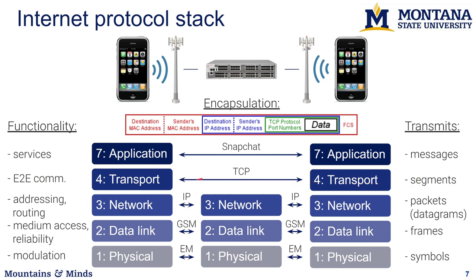TCP segments are transferred over the network layer, or IP layer, which deals with addressing and routing. Devices have IP addresses, and forwarding data through a network of routers is handled by routing implemented at the IP layer. The IP protocol runs between individual routers and sends packets, sometimes also called datagrams.